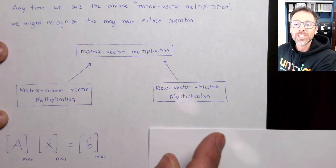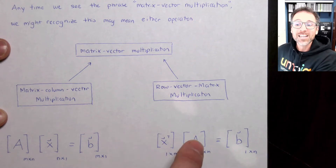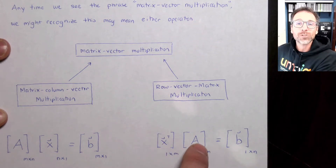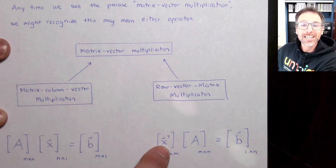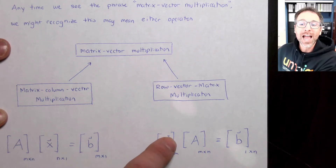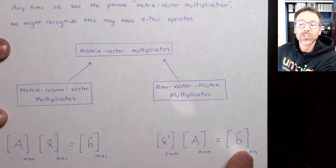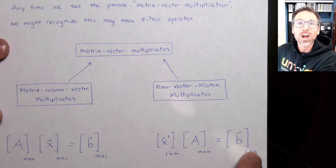The other operation is called row vector matrix multiplication. In this case, we're multiplying the m by n matrix A on the left hand side by a one by m row vector x transpose. The inner dimensions must agree, cancel out, and produce an output vector that is a one by n row vector.